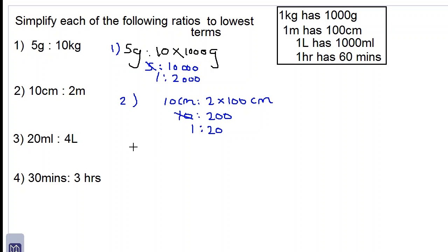Number three: 20 milliliters to 4 liters is the same as saying 20 milliliters to 4 times 1000 milliliters, which is 20 to 4000. Divide by 20 on both sides. 20 into 4000 is 200. So let's look at the fourth one: 30 minutes.